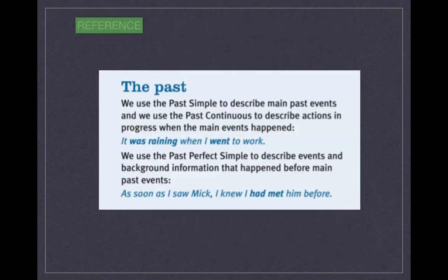We also spoke about the past and differentiated between the past simple, the past continuous, and the past perfect simple. We use the past simple to describe main past events: 'I got up at 6 am yesterday.' We use the past continuous to describe actions in progress when the main events happened: 'It was raining when I went to work.'